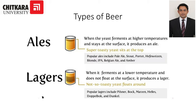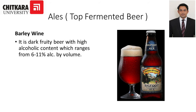The second category is lagers. When the yeast ferments at a lower temperature and does not float at the surface, it produces a lager. These beers are not so toasty because the yeast floats around. Popular lagers include pilsner, bock, märzen, helles, double bock, and dunkel.